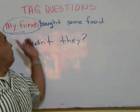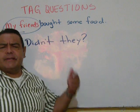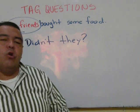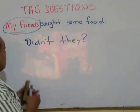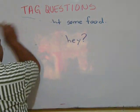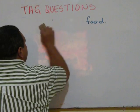Now, let's say it again. My friends bought some food. Didn't they? Try to say it at home. My friends bought some food. Didn't they? Try to practice.